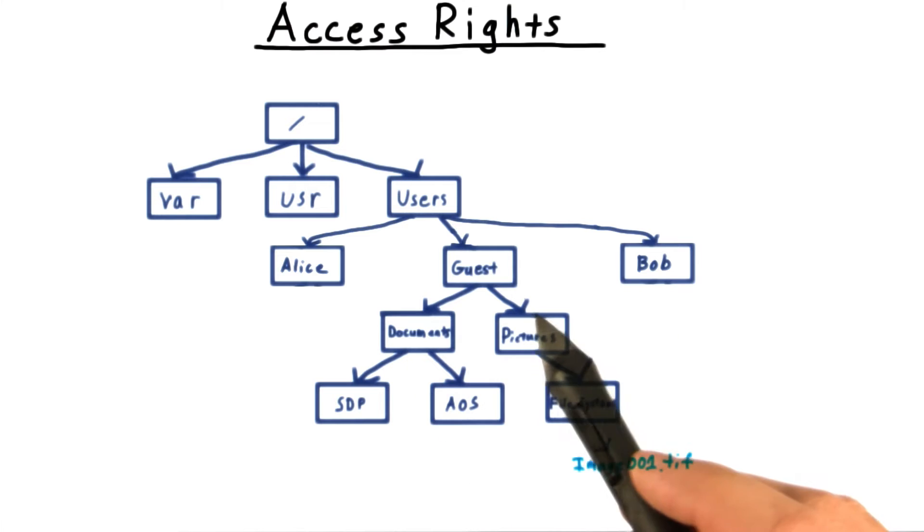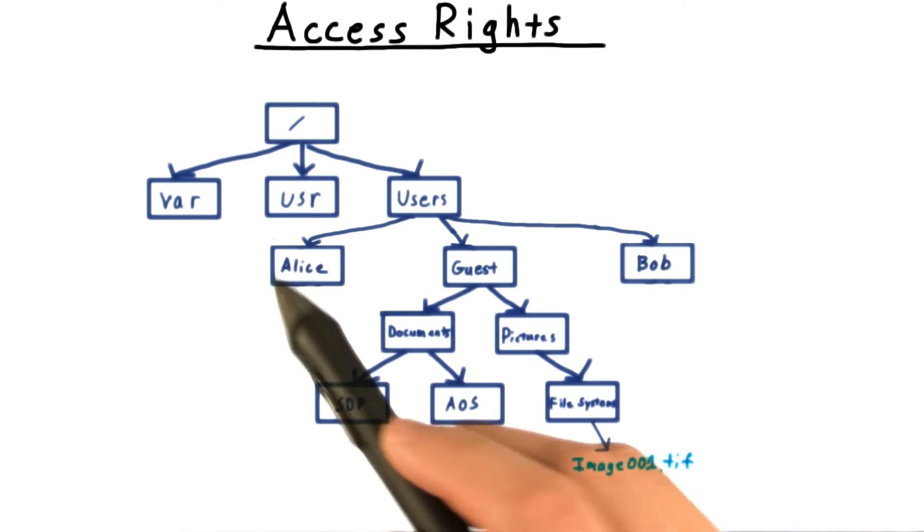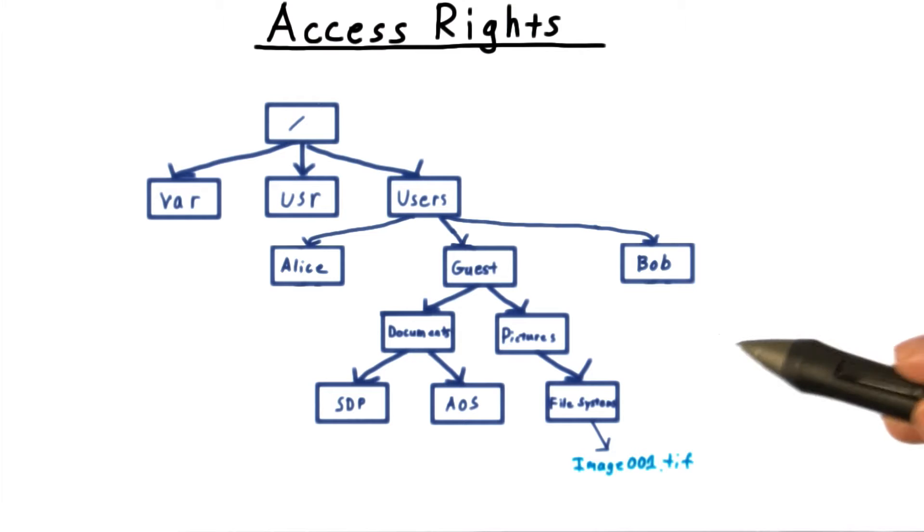And we certainly don't want to let just any user access the operating system's files. Ultimately, for each user file pair, we need to know what permissions that user has. That is, which of the basic actions of reading, writing, and executing the file is he allowed to do.